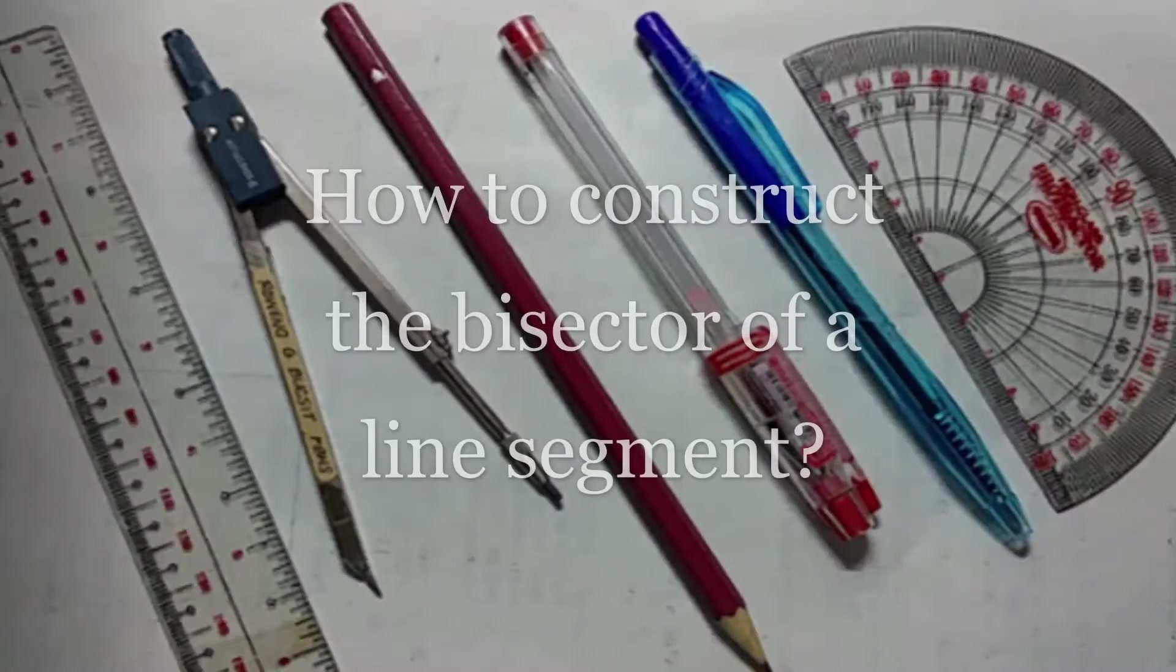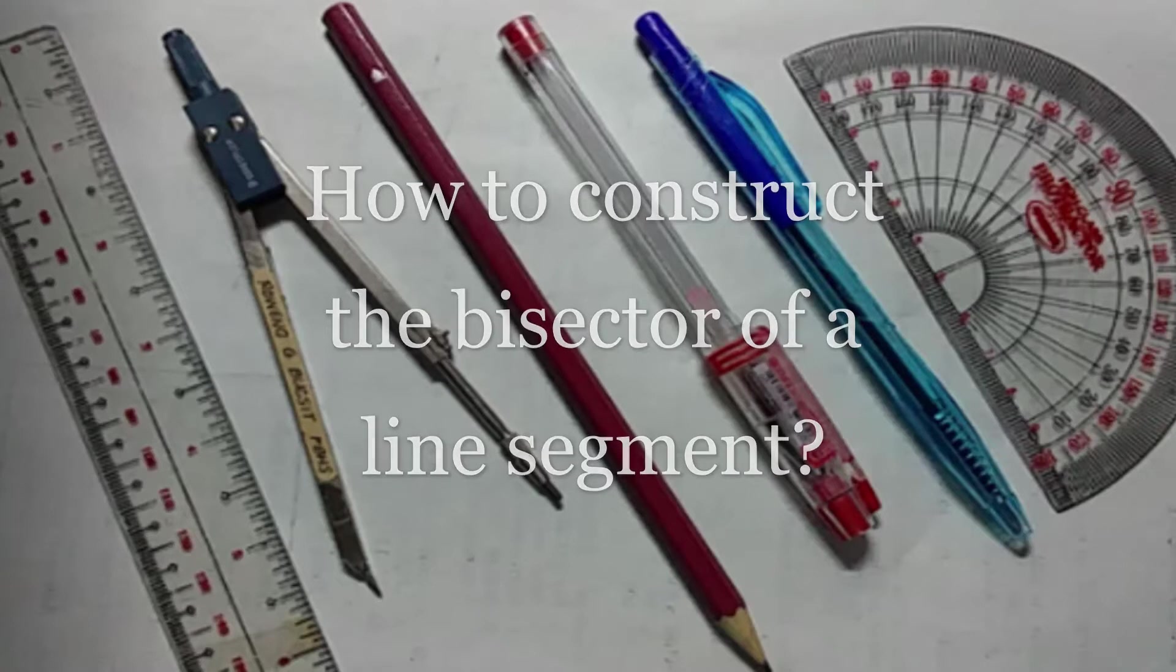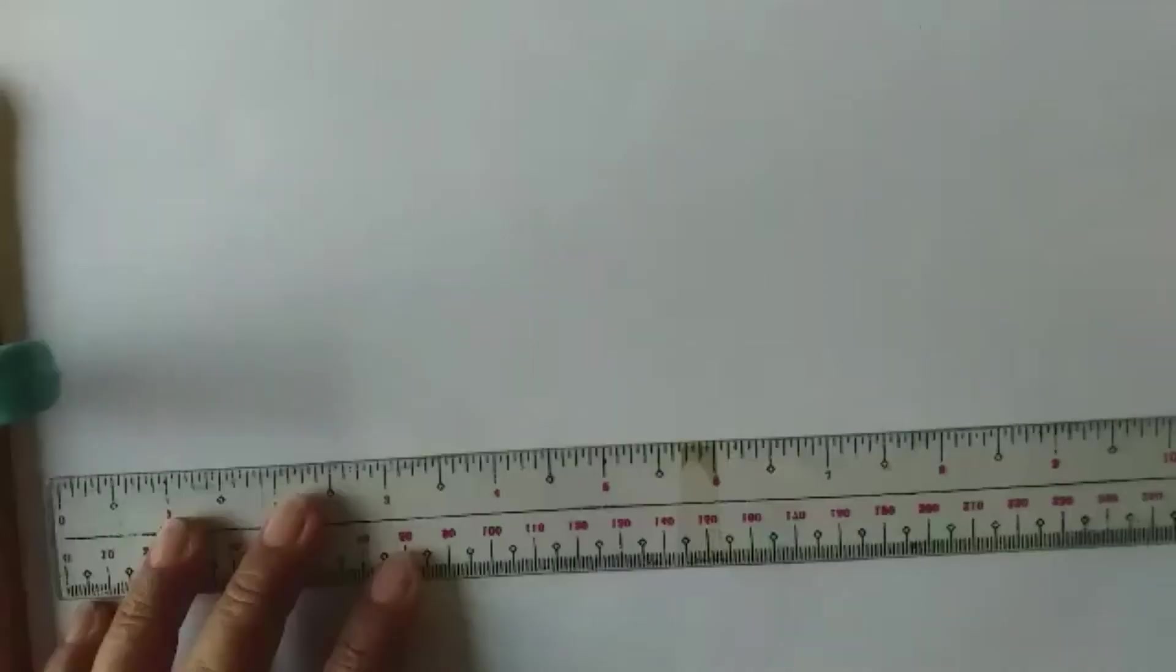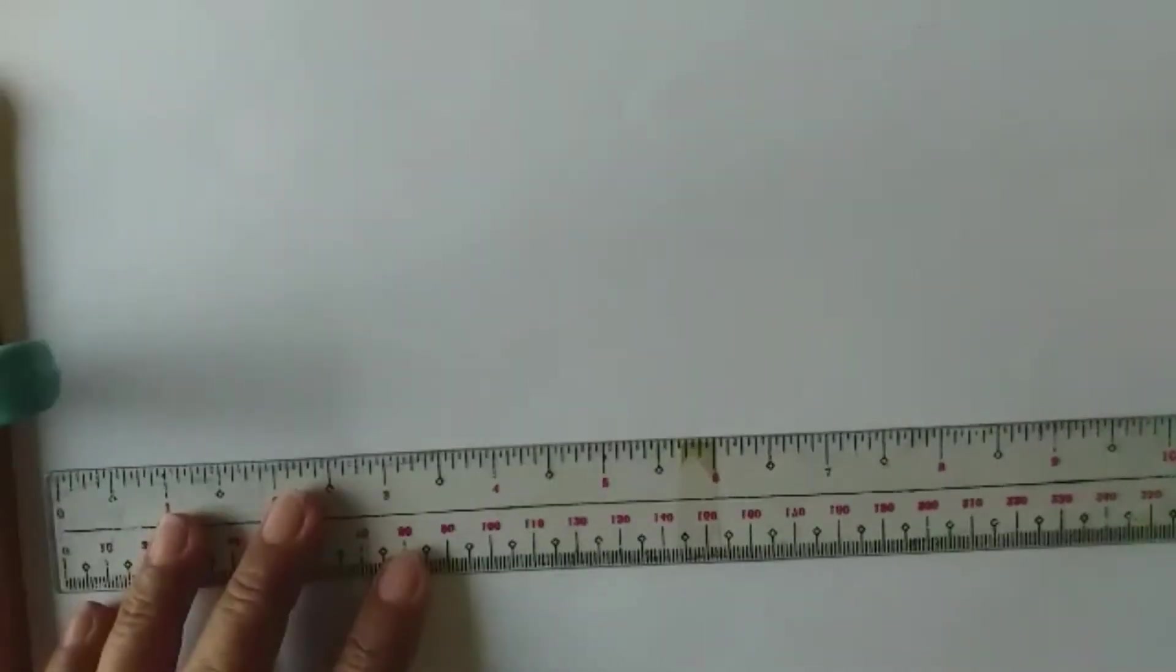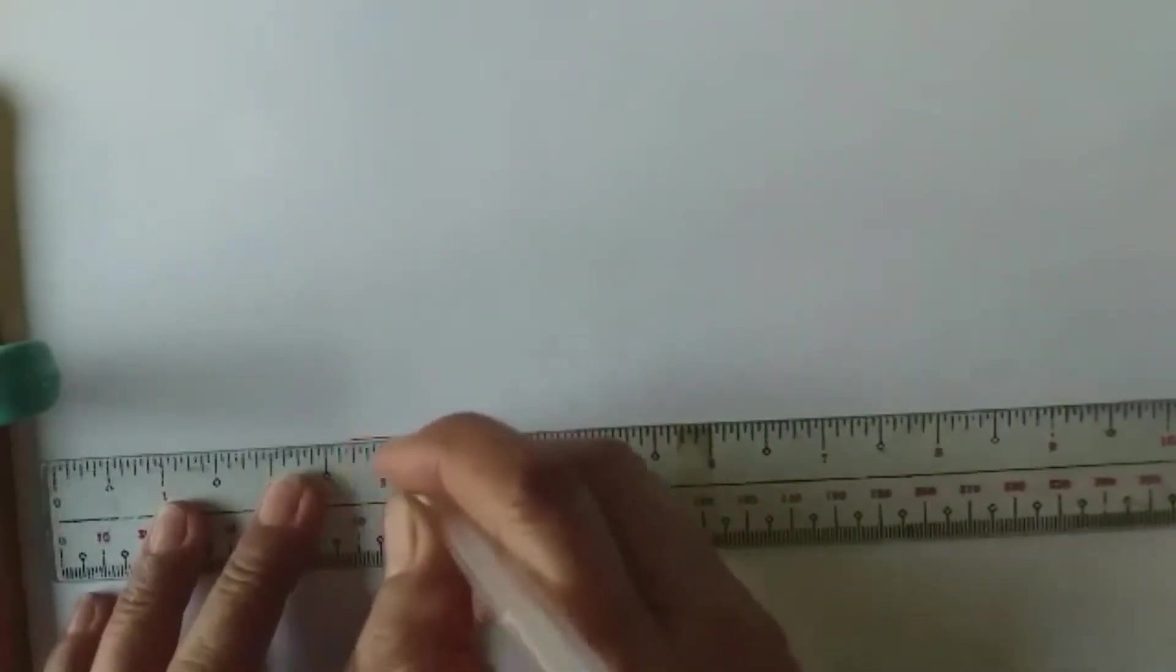Okay, so how do we construct the bisector of the line segment and how do we construct perpendicular lines? Use a straight edge to draw line segment. So let us draw line segment AB.